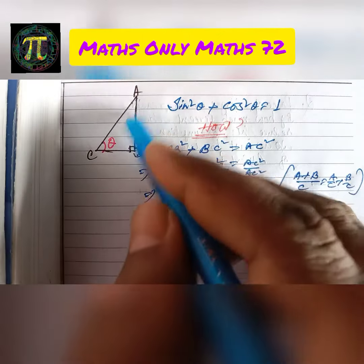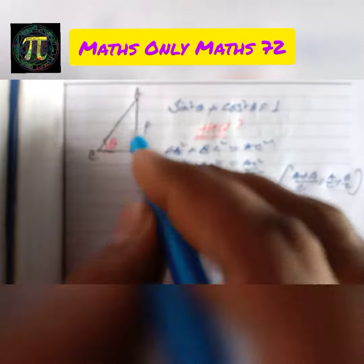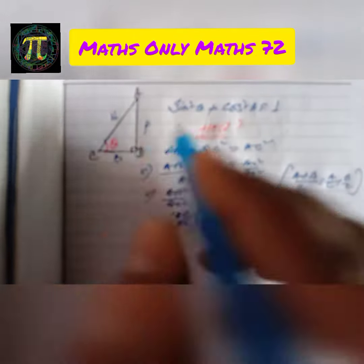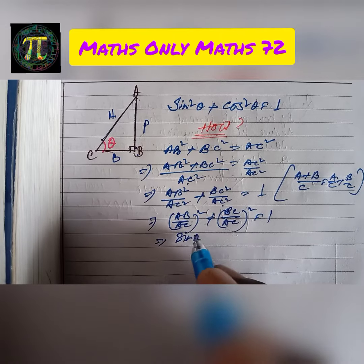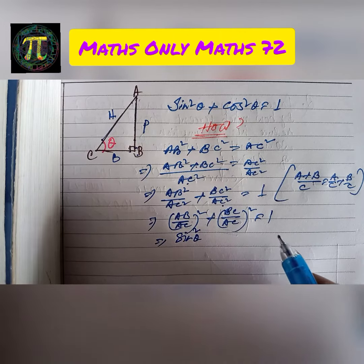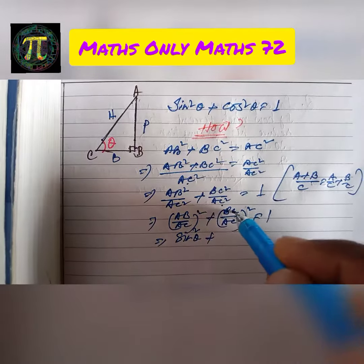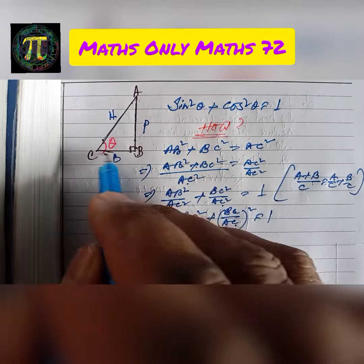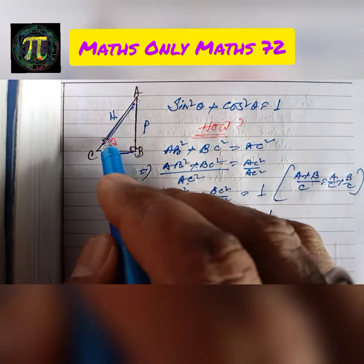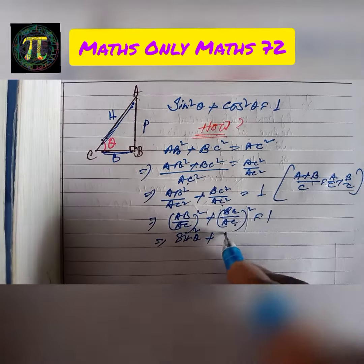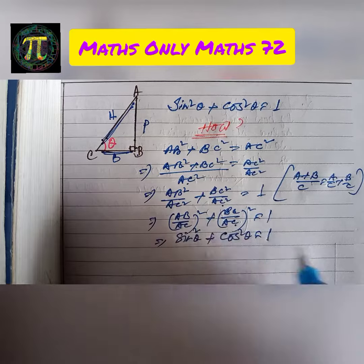Now, AB by AC — perpendicular by hypotenuse — is sin theta. So we have sin squared theta plus BC by AC. BC by AC — base by hypotenuse — is cos theta. Therefore sin squared theta plus cos squared theta equals 1.